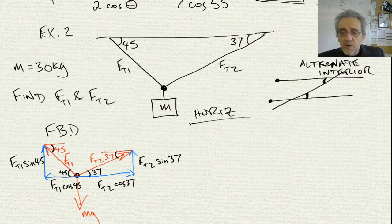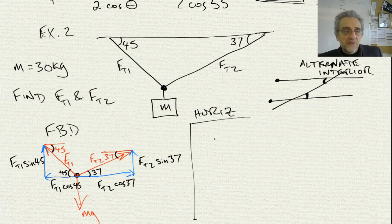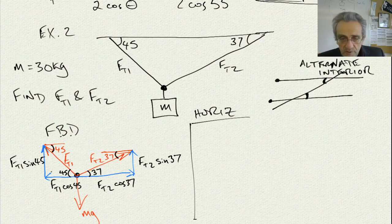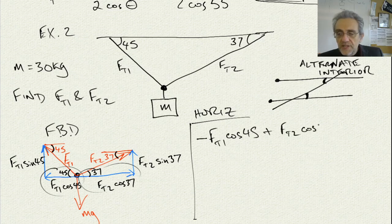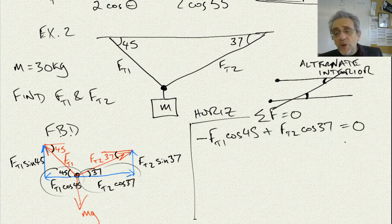Now that we have that, let's go back to our horizontal analysis. And for our horizontal analysis, we're going to have only two forces. We've got this one and this one. So we've got minus FT1 cosine 45 plus FT2 cosine 37, and both of those, remember, summation of the forces, they must equal zero. So they have to equal zero. Now, we can't solve this. We cannot solve this because we have two unknown values in one equation. So we stop there.